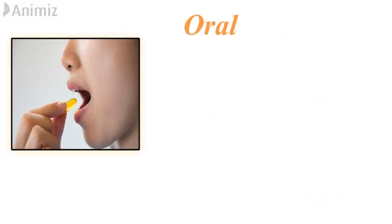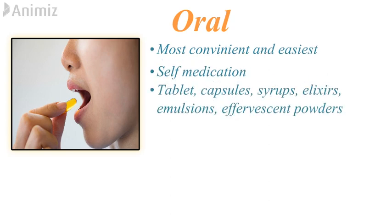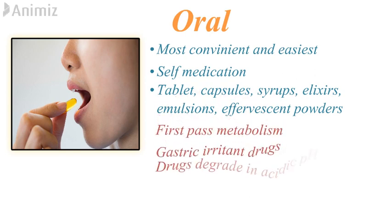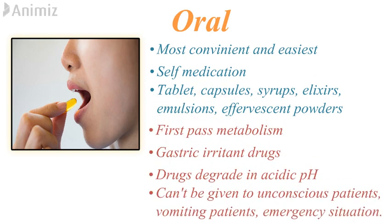The first is oral route of drug administration, in which we take the drug from the mouth, which passes through the stomach into the intestine. It is most convenient and easy to take, and self-medication is possible. Usually tablets, capsules, syrups, elixirs, emulsions, and effervescent powders are given by this route. But it has some disadvantages like first-pass metabolism. Gastric irritant drugs and drugs degraded in acidic pH cannot be given by this route, and it cannot be used for unconscious patients, vomiting patients, or in emergency situations.